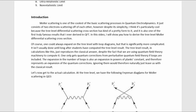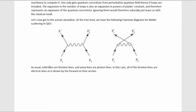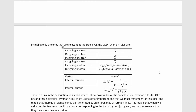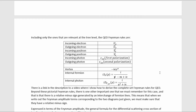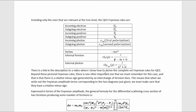At the tree-level, we have two Feynman diagrams for Møller scattering. The only difference between them is the ordering of the outgoing electrons. As usual, solid lines are fermion lines and wavy lines are photon lines. In this case, all of the fermion lines are electron lines, as shown by the forward-in-time arrows. Including only those relevant to the tree-level, the QED Feynman rules are as shown here. There is a link in the description to a video where I show how to derive the complete set of Feynman rules for QED.